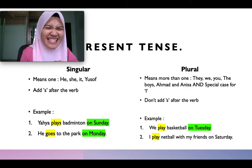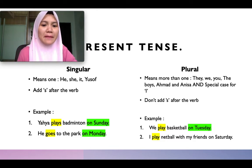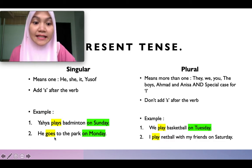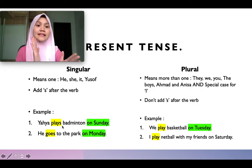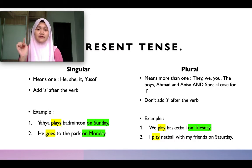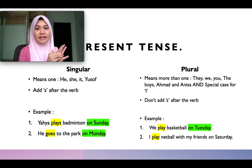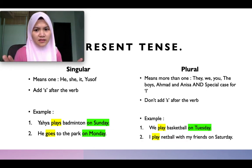For singular subjects, you need to add 's' after the verb. For example: 'Yahya plays badminton on Sunday' — there's an 's' on 'plays'. 'He goes to the park on Monday' — this one uses 'goes' (g-o-e-s) because the root word 'go' ends in 'o', so we add 'es'. For other verbs, usually just add 's'. When the verb ends in 'o', add 'es' to make it singular.